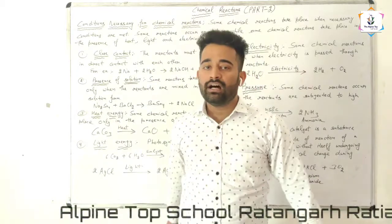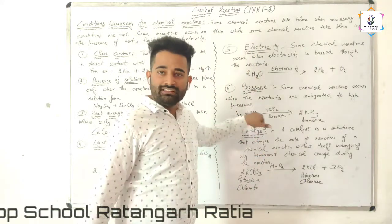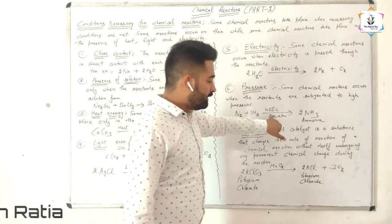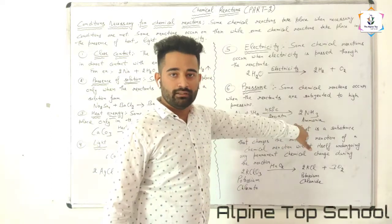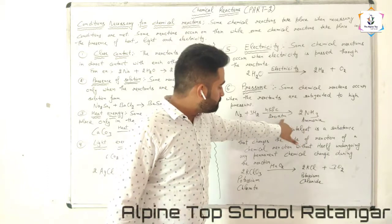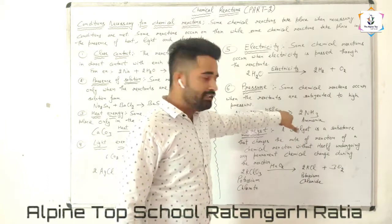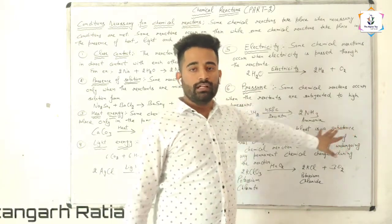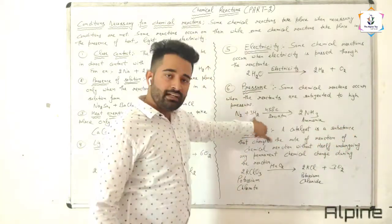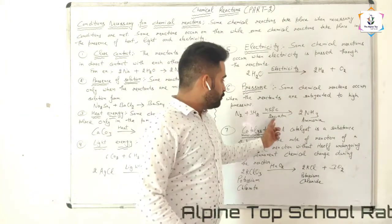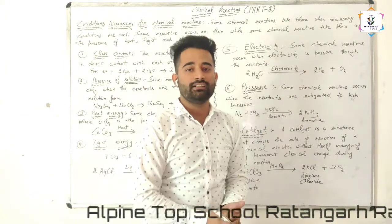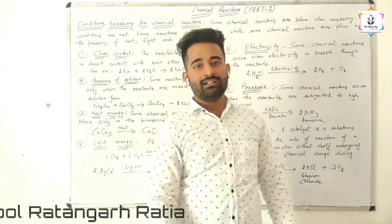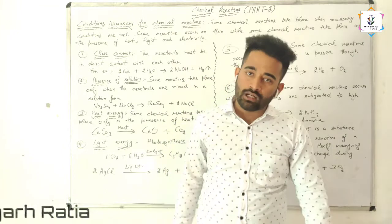The sixth condition is pressure. Some reactions take place under low or high pressure. When nitrogen is mixed with hydrogen under a pressure of 200 atmospheres and a temperature of 450 degrees Celsius, ammonia is formed. This means some reactions take place under different conditions of pressure.